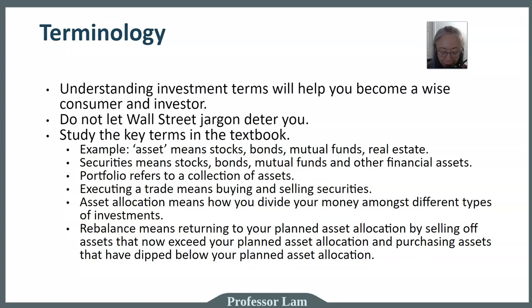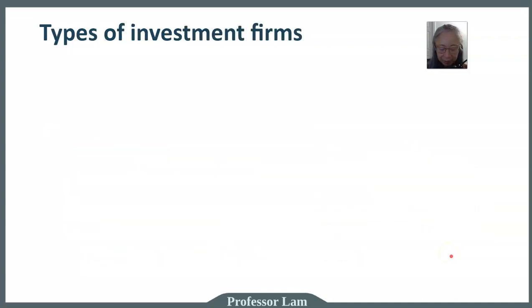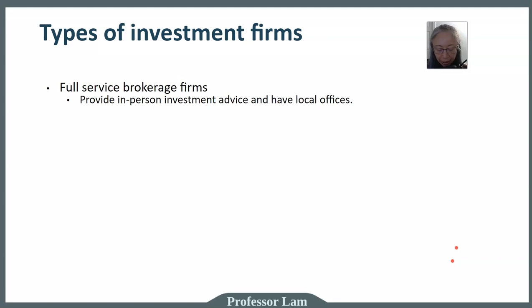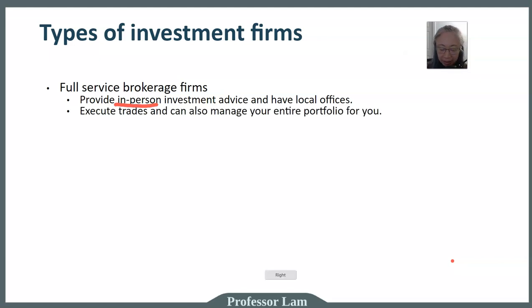So in just one slide we learned about asset allocation and rebalancing — both very important things to keep in mind. Now let's look at where you can go to invest. There are different types of investment firms. The first is what we call a full-service brokerage firm. Full service means they provide all services related to investment. They typically have in-person, face-to-face investment advice and offices close to you. They can execute trades — meaning buy and sell any securities you want.